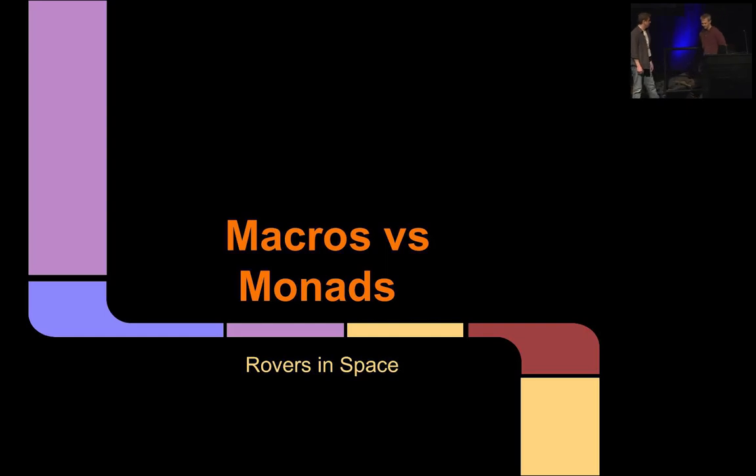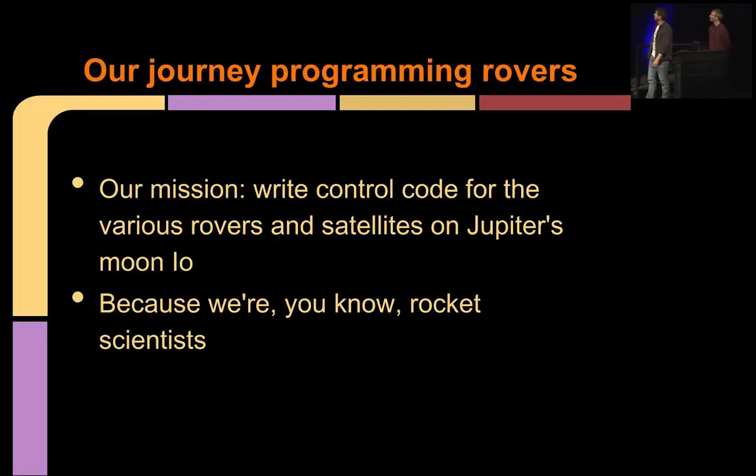I'm Chris Houser. This is Jonathan Claggett. We work for Alano Cloud. And today we're going to take you on a journey, an odyssey, as we show you the evolution of a piece of code through various stages. We're going to use a single function from that body of code to represent what we're talking about.